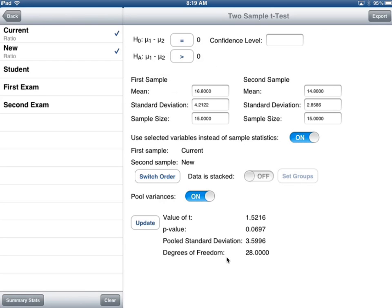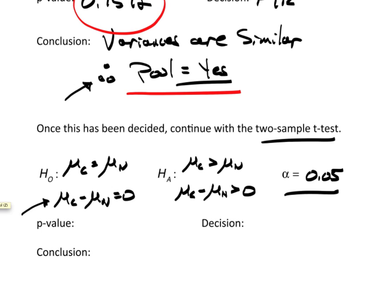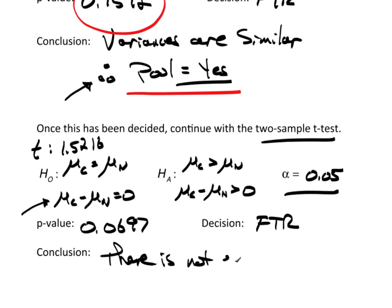And there's everything I know. There's the p value. There's the value of t. Here's a pooled standard deviation and the degrees of freedom. So the p value, I'm going to write down here 0.0697. And the value of t was 1.5216. Decision is going to be fail to reject because this is greater than alpha.